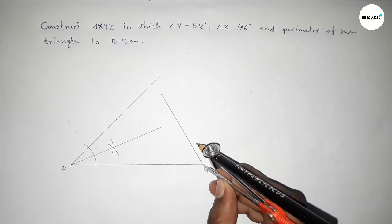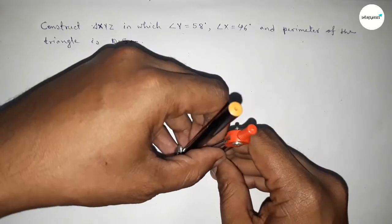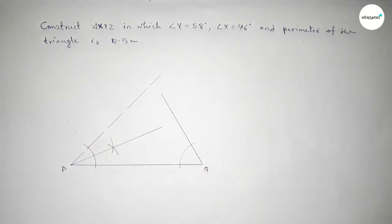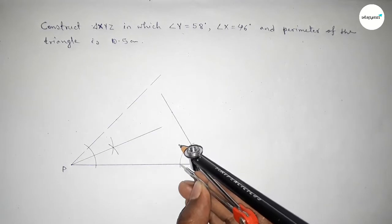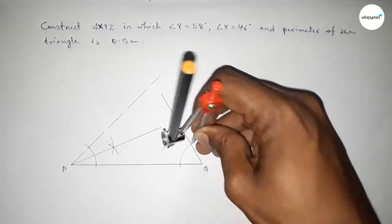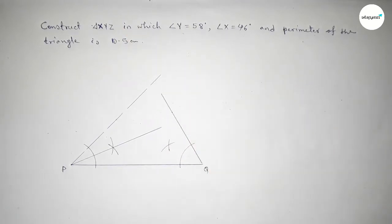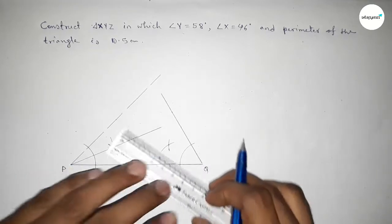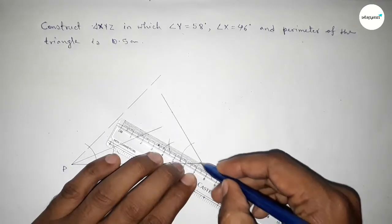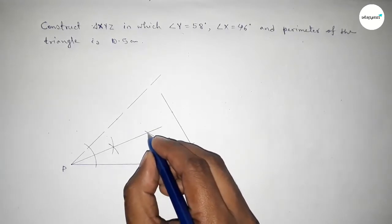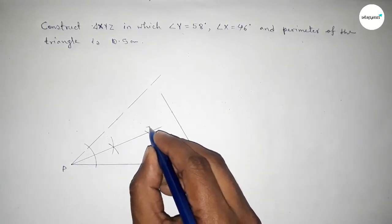Now we have to bisect the angle at Q. Putting the compass here and taking any length, drawing an arc. With the same length, putting the compass on the other arm and cutting here. Both curves intersect at a point. Now joining this line.